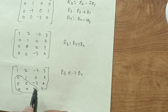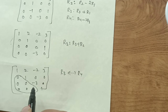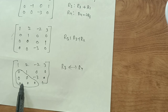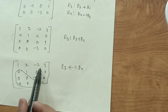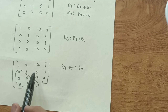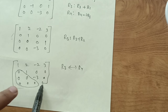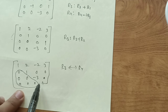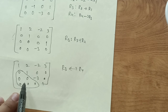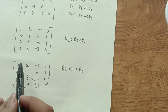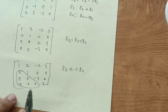Now we just count the non-zero rows in this final matrix. A non-zero row is one where at least one element is not zero. Counting: rows 1, 2, 3, and 4 — there are 4 non-zero rows.